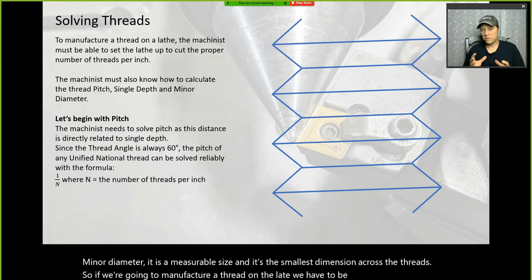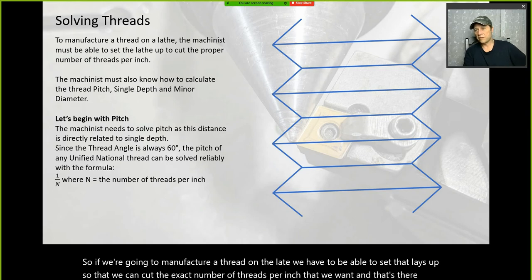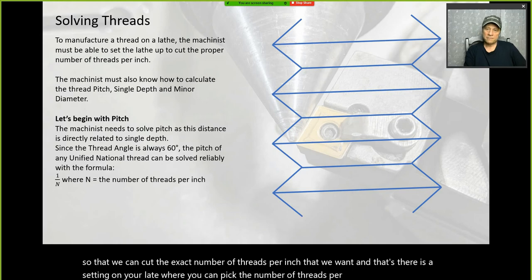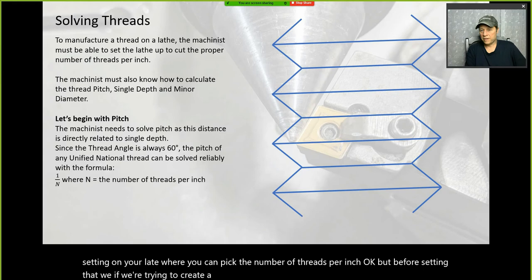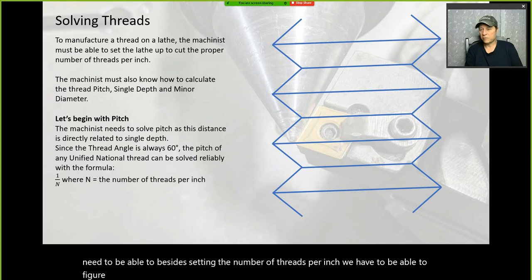To manufacture a thread on the lathe, we have to set it up to cut the exact number of threads per inch that we want. There's a setting on your lathe where you can pick the number of threads per inch. But besides that setting, we also need to figure out how deep to cut the thread.